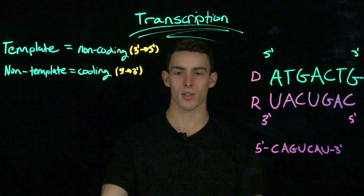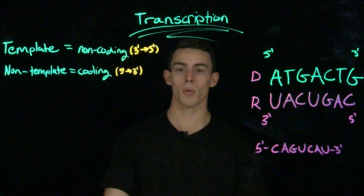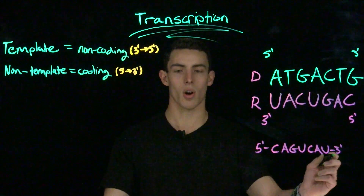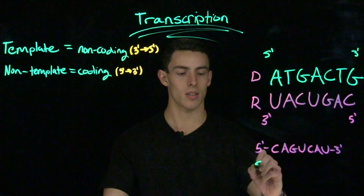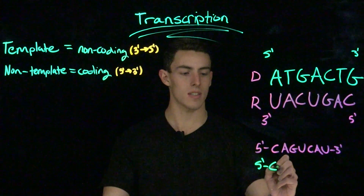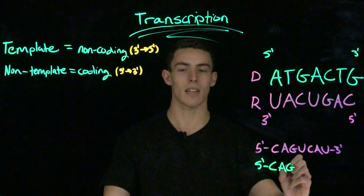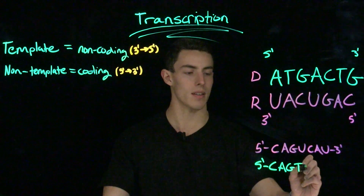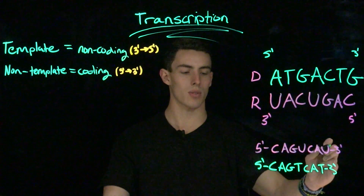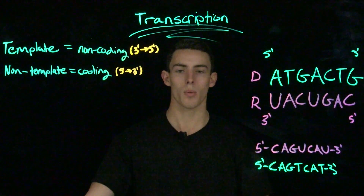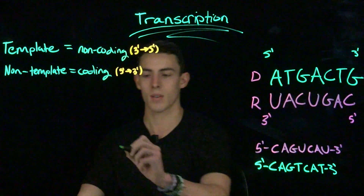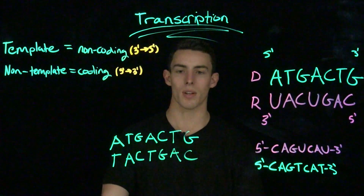Something else your professor could ask is to determine the coding sequence. Remember, our coding sequence is the same as our non-template, and our coding sequence is also the same as our RNA molecule. So this is actually a pretty easy task — all we have to do is take this RNA code and convert it back to DNA code. C's stay the same, A's stay the same, G's stay the same, but we turn uracil into thymine. So there we have it: we have our non-coding sequence, our coding sequence, and our RNA transcript. If we wanted to verify this, we can go back and write this section of DNA out complementary to the original template DNA, and it matches up — so we know we did this correctly.